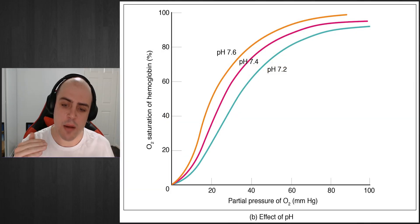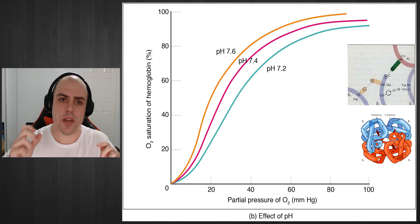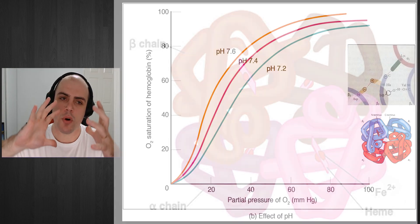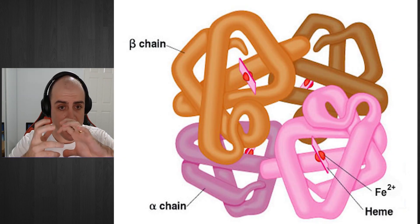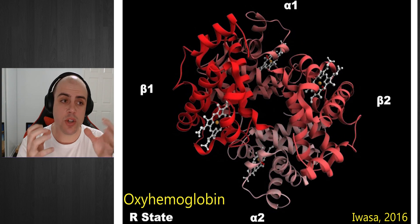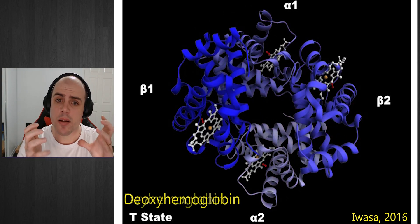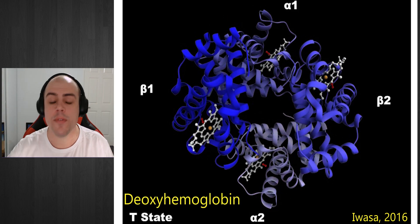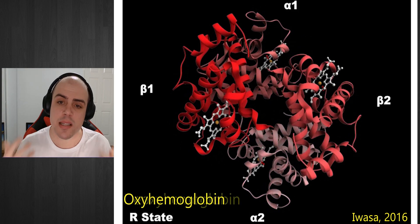When we get more acidic in our tissues, it causes the hemoglobin protein to change its conformation, making it less likely for that oxygen molecule to be able to stay there and will be removed from the hemoglobin molecule and be delivered to the tissue.